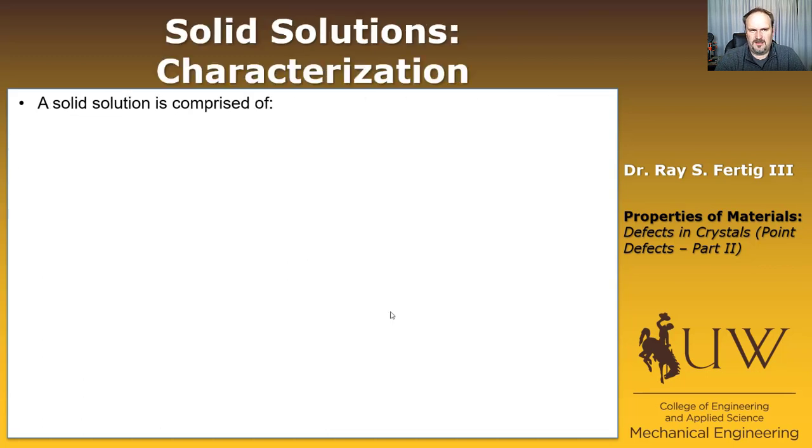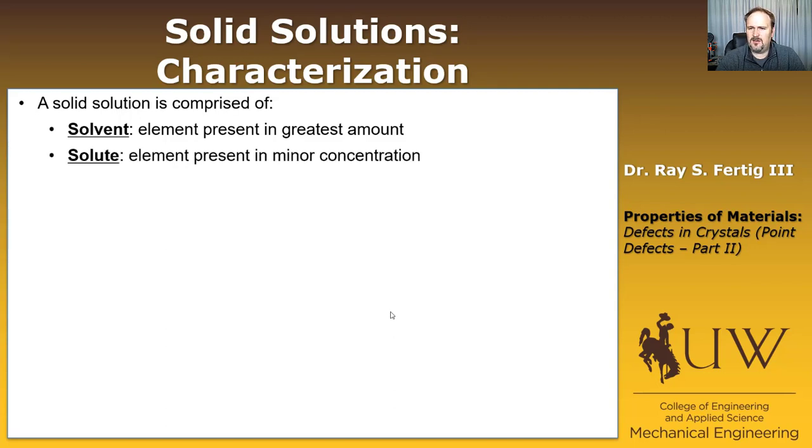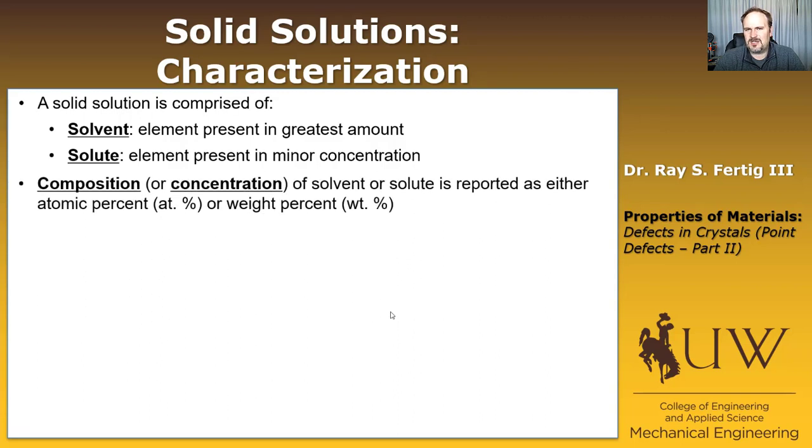Okay, so how now do we want to talk about solid solutions? If we're going to add an impurity element into a material, we need to start defining some terms. We're going to define the solvent as whatever element is present in the greatest amount. So in the example of our aluminum lithium alloys, aluminum would be the solvent. In the case of our carbon iron alloys, i.e. steel, then iron would be our solvent. And the solute is going to be the element that's present in a minor concentration.